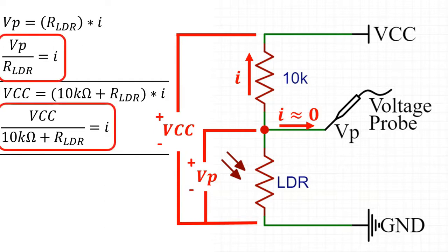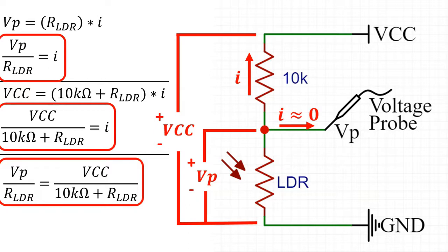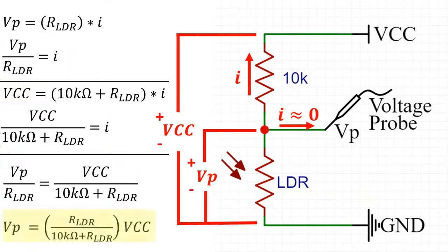If we take these two we can then set the left hand side of both equations equal to each other, and then we can rearrange that to get that VP equals the resistance for the LDR divided by 10 kilo ohms plus the resistance of LDR, multiplied by whatever we put in VCC.